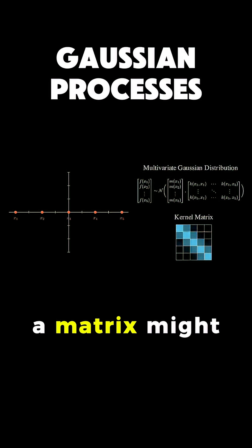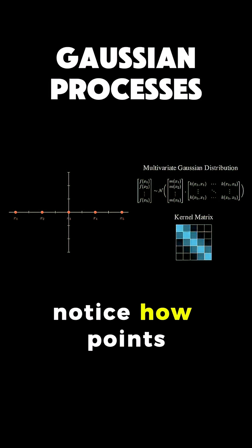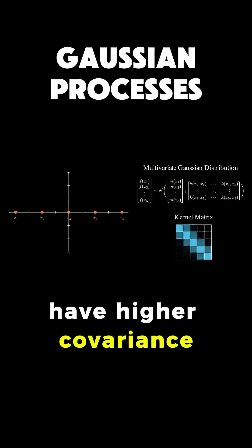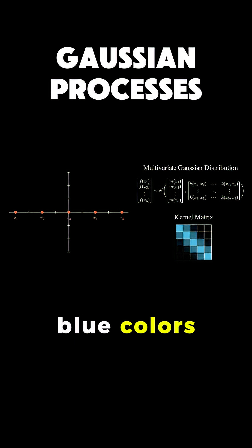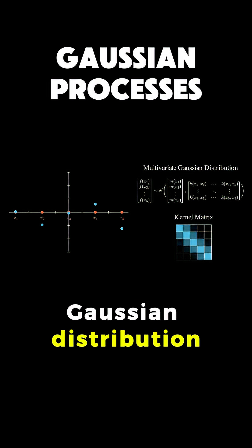Here's what such a matrix might look like. Notice how points closer together have higher covariance, shown by brighter blue colors. When we sample from this multivariate Gaussian distribution,